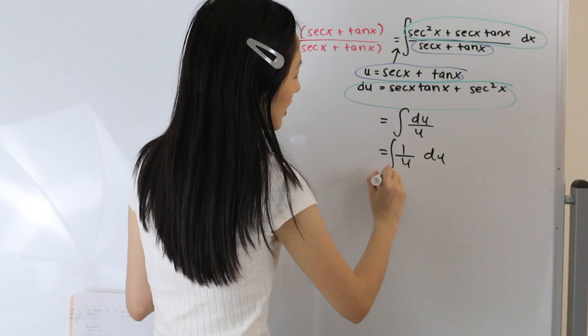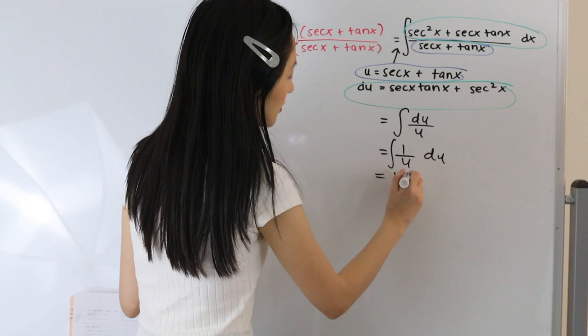And as we know, the integral of 1 over u is the ln of u, and let's not forget our plus c.